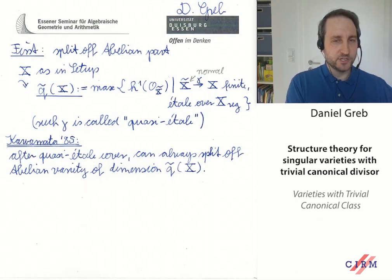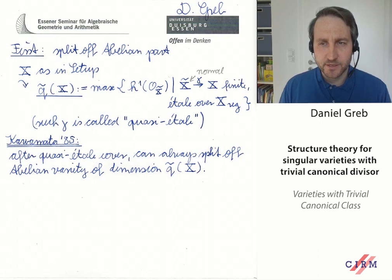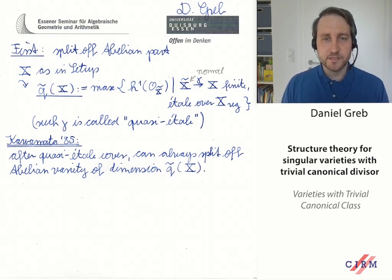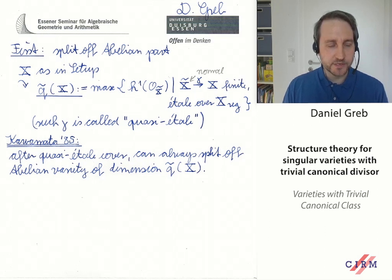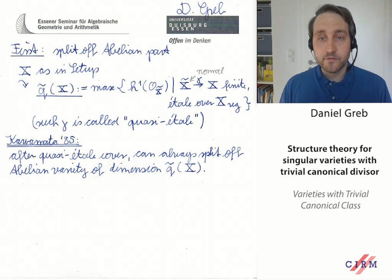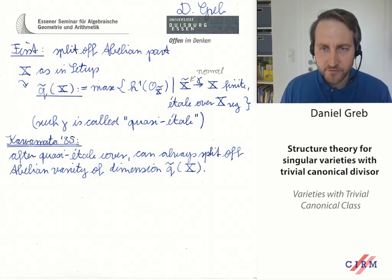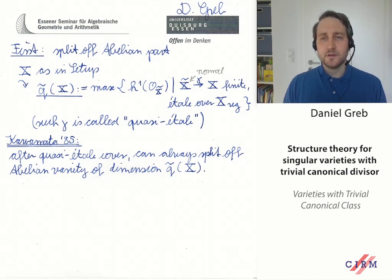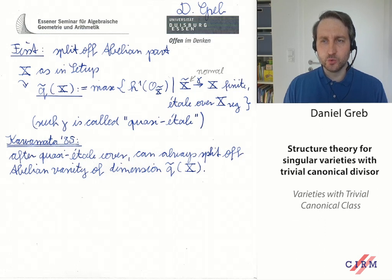If you have such an X as in the setup, I want to first understand, thinking back to the Beauville-Bogomolov-Fujiki decomposition theorem, how to split off the abelian part. For this, I define the invariant Q-tilde of X, which is the maximum of all H^1(O(X-tilde)), where X-tilde lies over X and the map X-tilde to X is a finite cover étale over the regular or smooth locus of X. These branch in codimension two and higher.